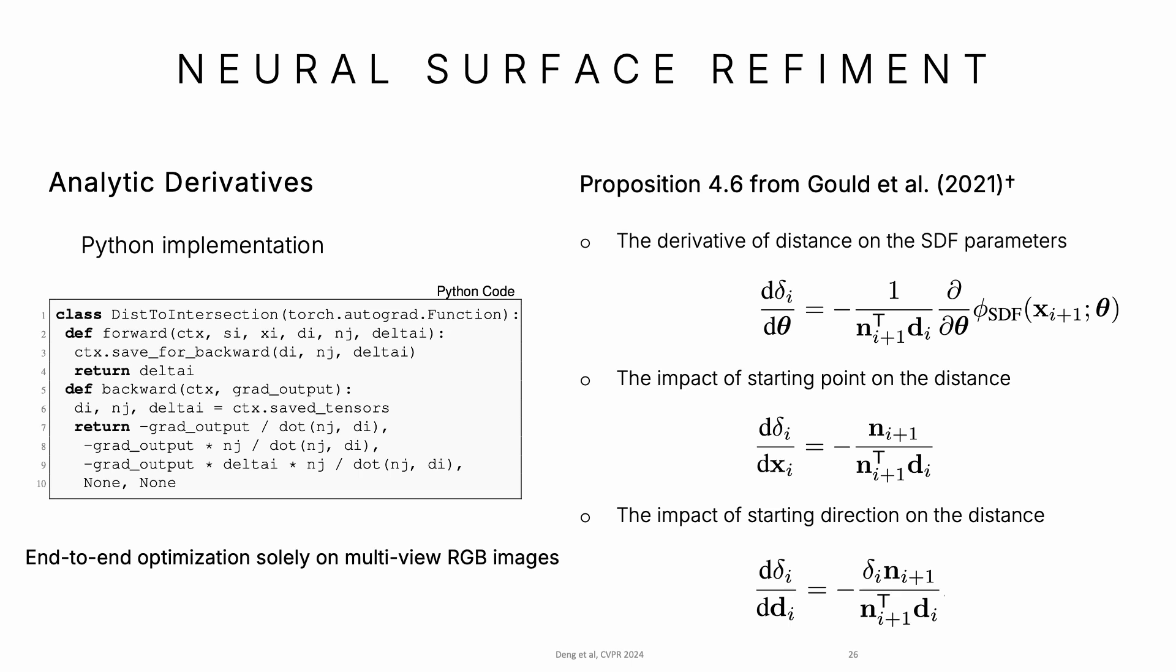With analytic derivatives, our method can be easily implemented with PyTorch. It enables end-to-end optimization solely on multi-view RGB images.